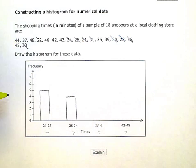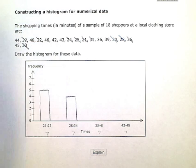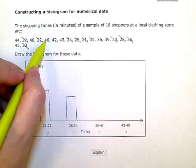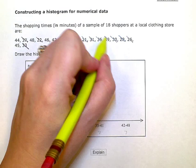Next I have 35 to 41. So one, two, three, three. So I'm going to do a bar that is three units high.